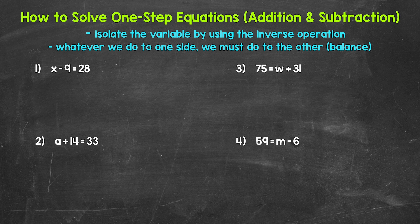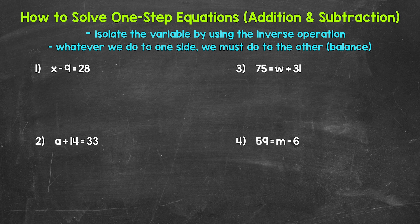When we solve one-step equations, we want to look to isolate the variable, which just means to get the variable by itself. We do that by using inverse operations — we can think of an inverse operation as the opposite operation. Basically, we use an inverse operation to undo another operation, and this will isolate the variable when we solve equations. And always remember, whatever we do to one side of the equation, we must do to the other side of the equation. This keeps everything balanced and equivalent.